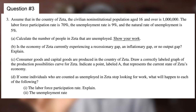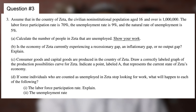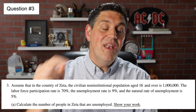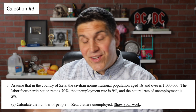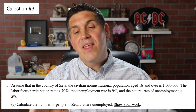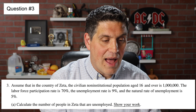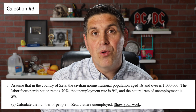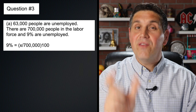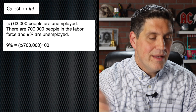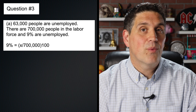So for free response number three, you're doing some calculations — it's focusing on unemployment. It gives you some information and says the labor force participation rate is 70%, so you know there are 700,000 people in the labor force. Now in A, it asks you to calculate the number of people that are unemployed. They've never done this before — usually they'll give you the number of people unemployed, give you the labor force, and you figure out the unemployment rate. This time they gave you the unemployment rate, and you had to figure out that it was 63,000 people who were unemployed. You had to show the work: there were 700,000 people in the labor force, 9% of them were unemployed, so 9% of 700,000 is 63,000.